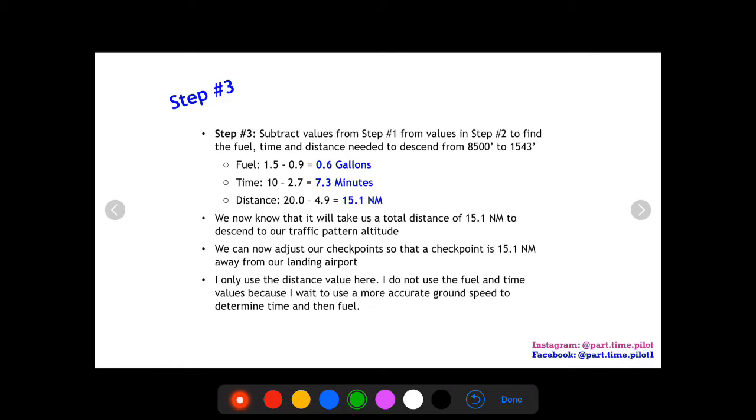Now, step three is we find the difference between steps one and two. So for fuel, we have 1.5 minus 0.9, we get 0.6 gallons of fuel. For time, it's 10 minus 2.7 for 7.3 minutes. And distance was 20 minus 4.9 to get 15.1 nautical miles. So now we know that it'll take a total distance of 15.1 nautical miles to descend to our traffic pattern altitude from our cruise altitude.